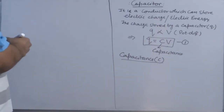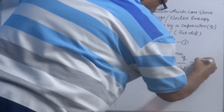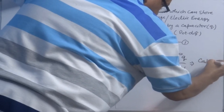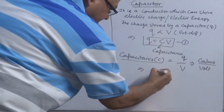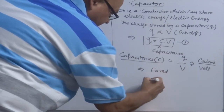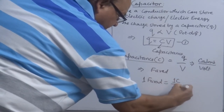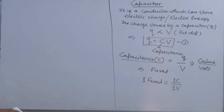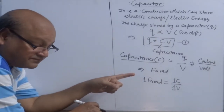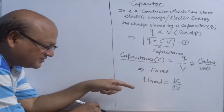Capacitance is measured as C equals Q over V. The unit of Q is coulomb and the unit of potential is volt, so the unit of capacitance is called farad. One farad is equal to one coulomb per one volt. A capacitor is said to be one farad if it stores one coulomb of charge against a potential difference of one volt.